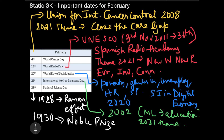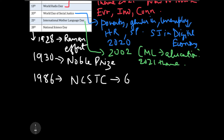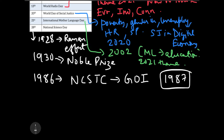This idea of celebrating National Science Day was given in 1986 by NCSTC — the National Council for Science and Technology Communication. This organization asked the Government of India to please celebrate this day as National Science Day, and from 1987 onwards we have been celebrating 28th February as National Science Day.